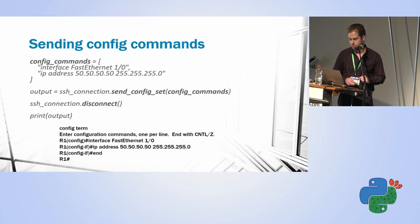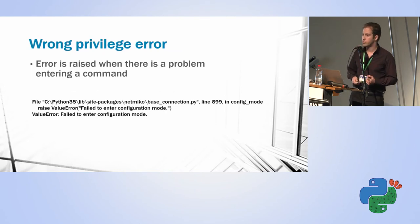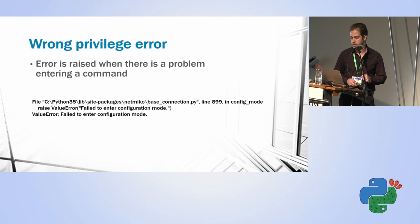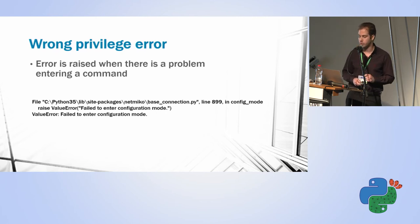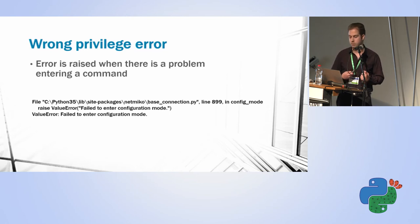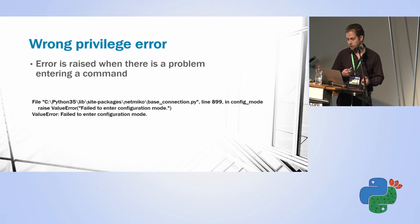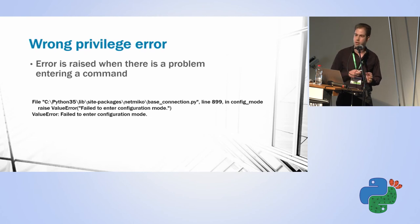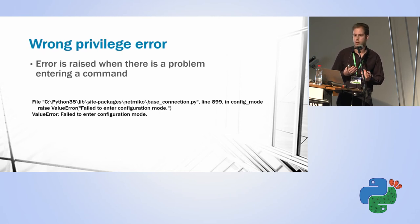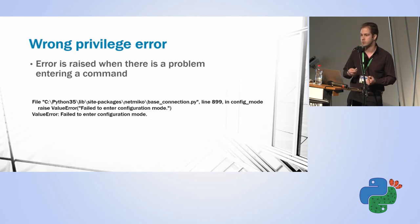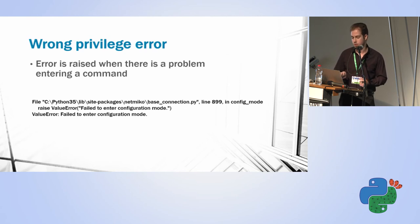It enters configuration mode, sends the configuration line, then ends the session. What happens if something goes wrong? Here is a situation where the user doesn't have privileges to enter configuration mode — I get an error: 'failed to enter configuration mode.' Once I have this, I can send syslogs, send an email, or throw an error telling the user to contact the administrator. Unlike Paramiko where you get raw output and must parse it yourself, NetMiko already knows what to expect and tells you if something went wrong.